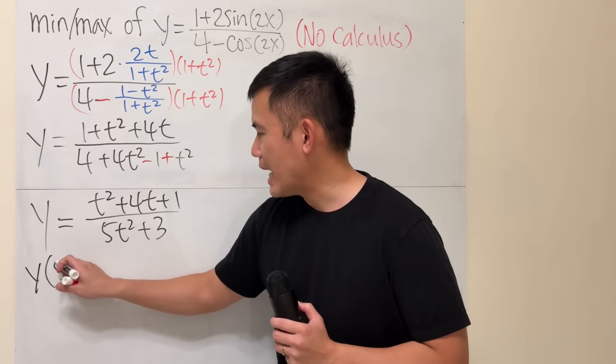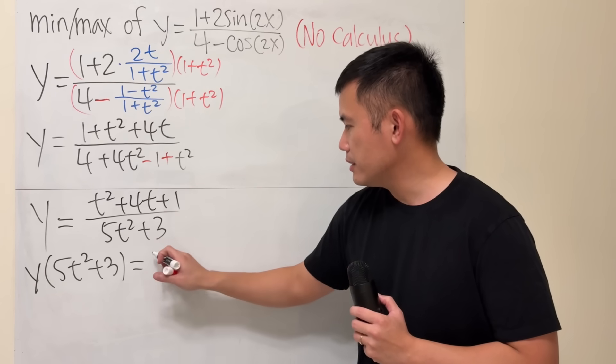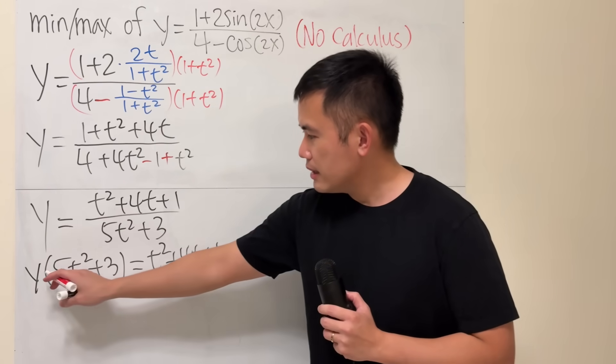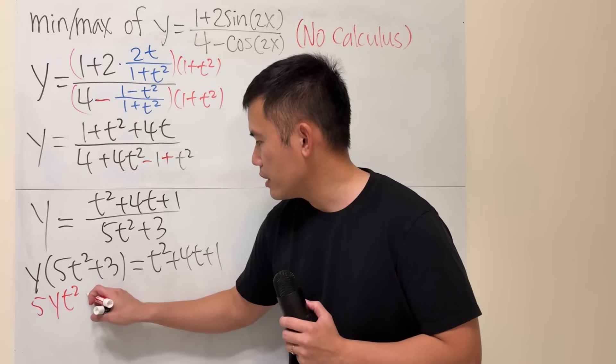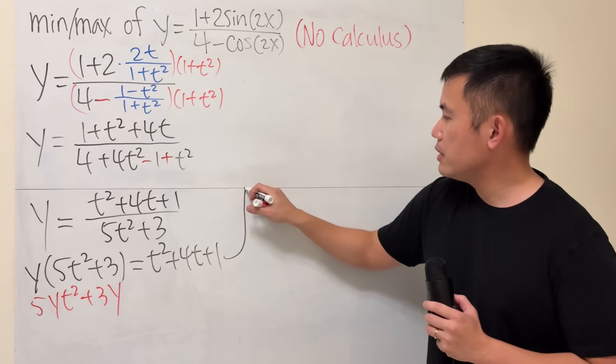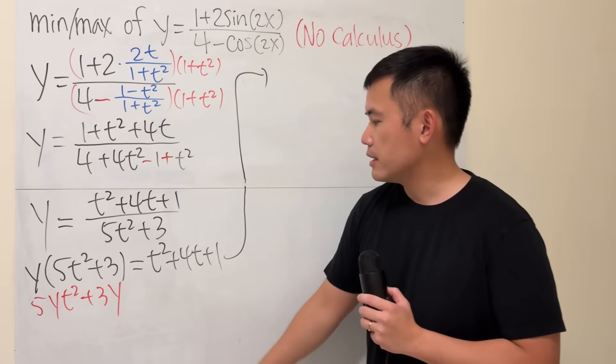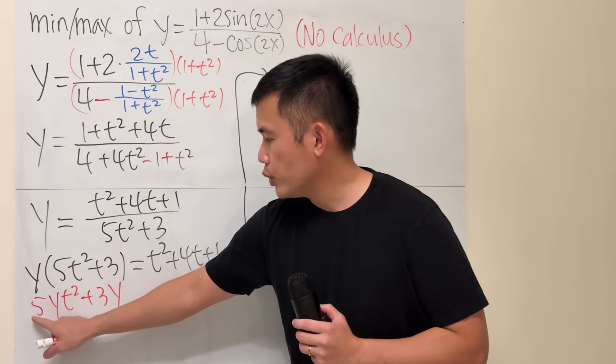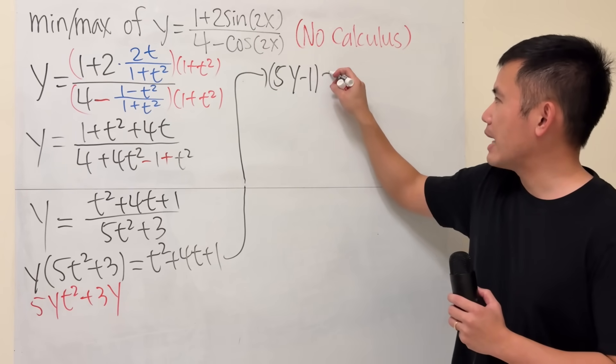first we have y times 5t squared plus 3. And that's equal to the right-hand side here, t squared plus 4t plus 1. And then distribute this a little bit. We get 5yt squared plus 3y. And then I'm just going to be moving all these terms to the left-hand side. So, subtract t squared to both sides. And then I will factor out the t squared right here. So, we will have 5y minus 1 times t squared.